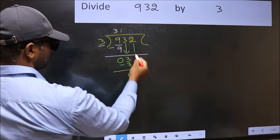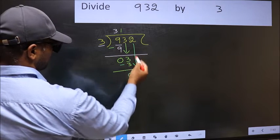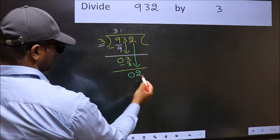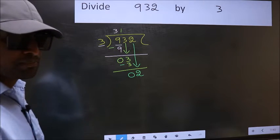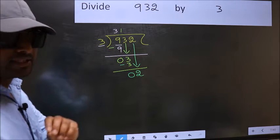After this, bring down the beside number. So, 2 down. After this step, the mistake happens. And the mistake is this.